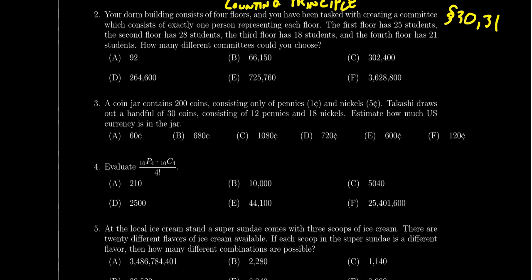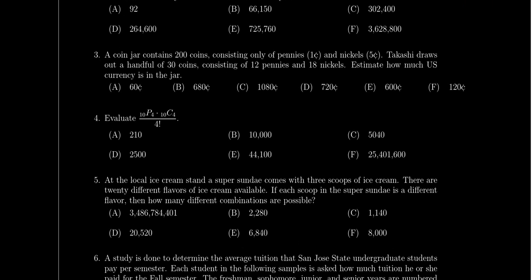Question number three is more of a statistics enumeration question — the type of things we saw in lesson 34. We try to count the number of objects in some collection using sampling techniques. This could be the one-sample estimation or the two-sample estimation. For example, we have 200 coins — some pennies, some nickels — we take a handful as a sample. Can we guess how many coins are in the jar? Using sample proportions to estimate the size of the population.